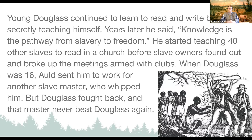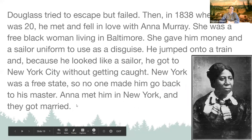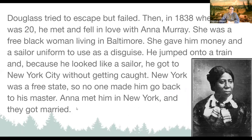Frederick Douglass started teaching 40 other slaves to read in a church before slave owners found out and broke up the meeting armed with clubs. He knew it was dangerous and a risk to teach other slaves to read, but that's how important he thought it was. When Douglass was 16 years old, his master sent him to work for another slave master who whipped him, but Douglass fought back and that master never beat Douglass again. He was a very strong man, not just physically but also intellectually.